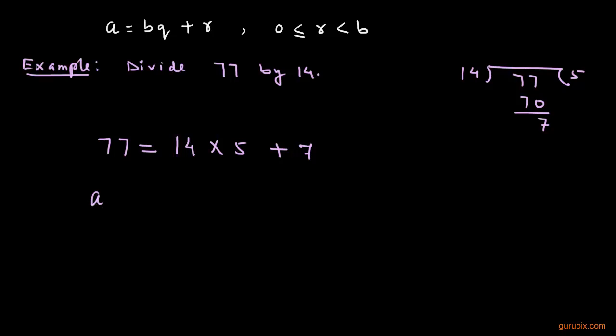we get a equals 77, b equals 14, q is 5, and r is 7.